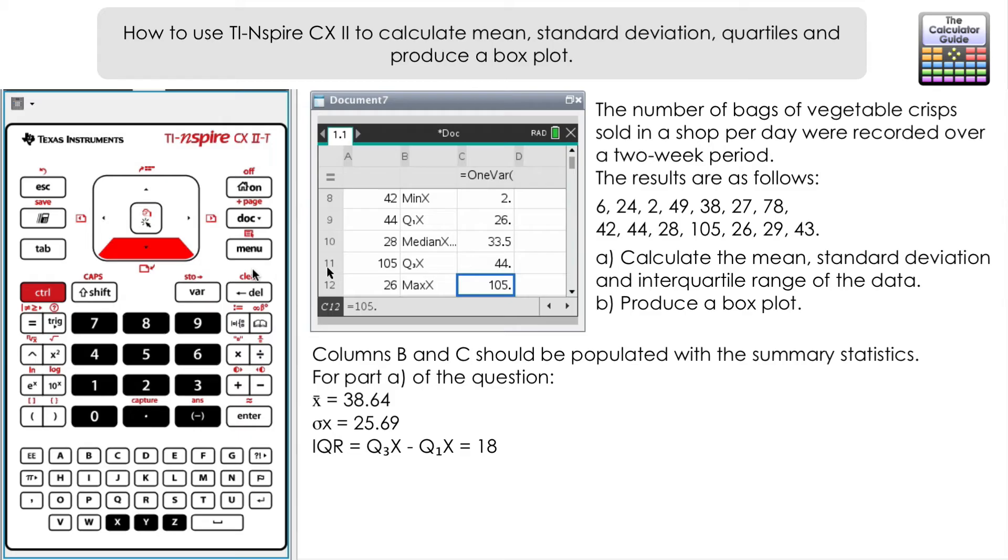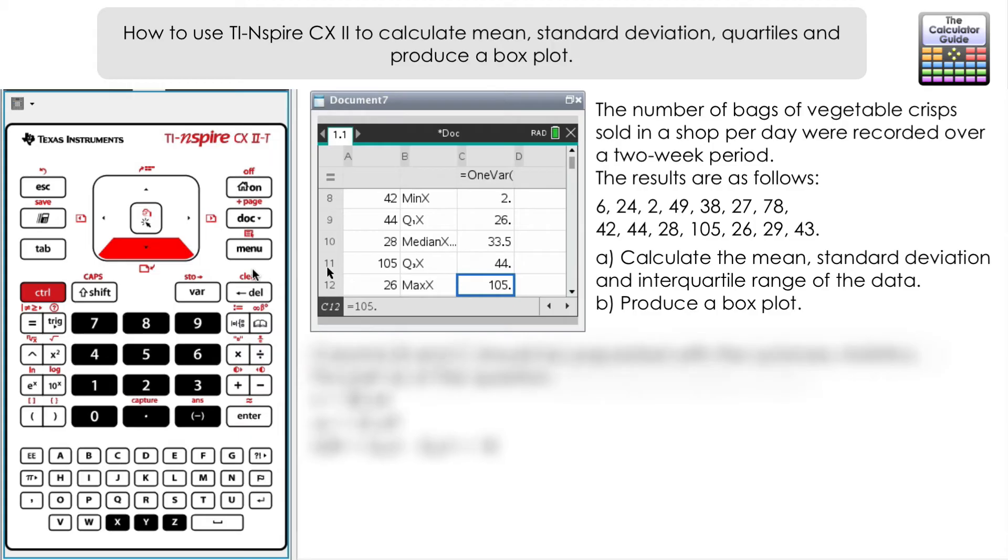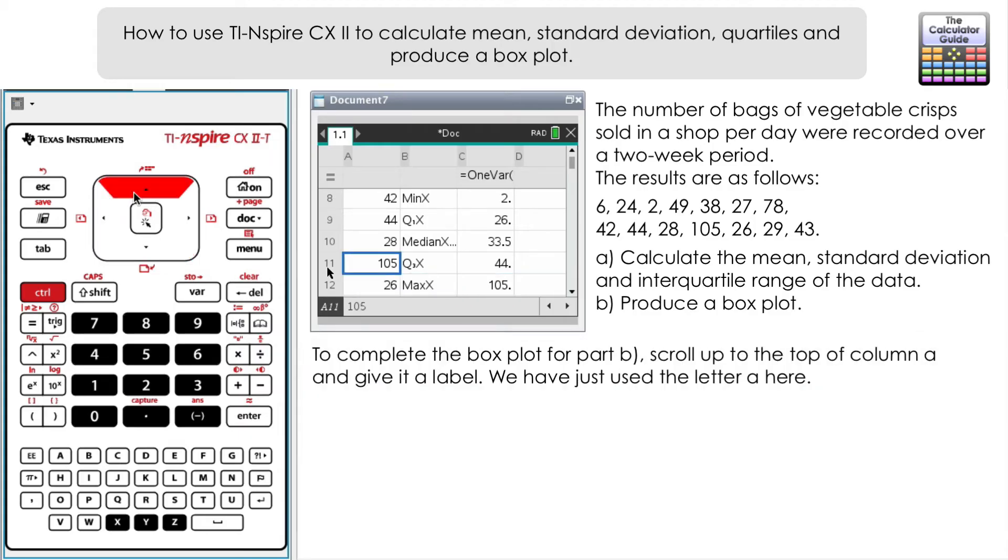IQR is going to be 18, and so we've answered Part A. For Part B we're going to produce a box plot. We've already got the data inputted. What we need to do just to help the calculator out here is just to label column A to identify it as being the data that we're going to use when we produce our box plot. I'm going to navigate right up to the top of column A.